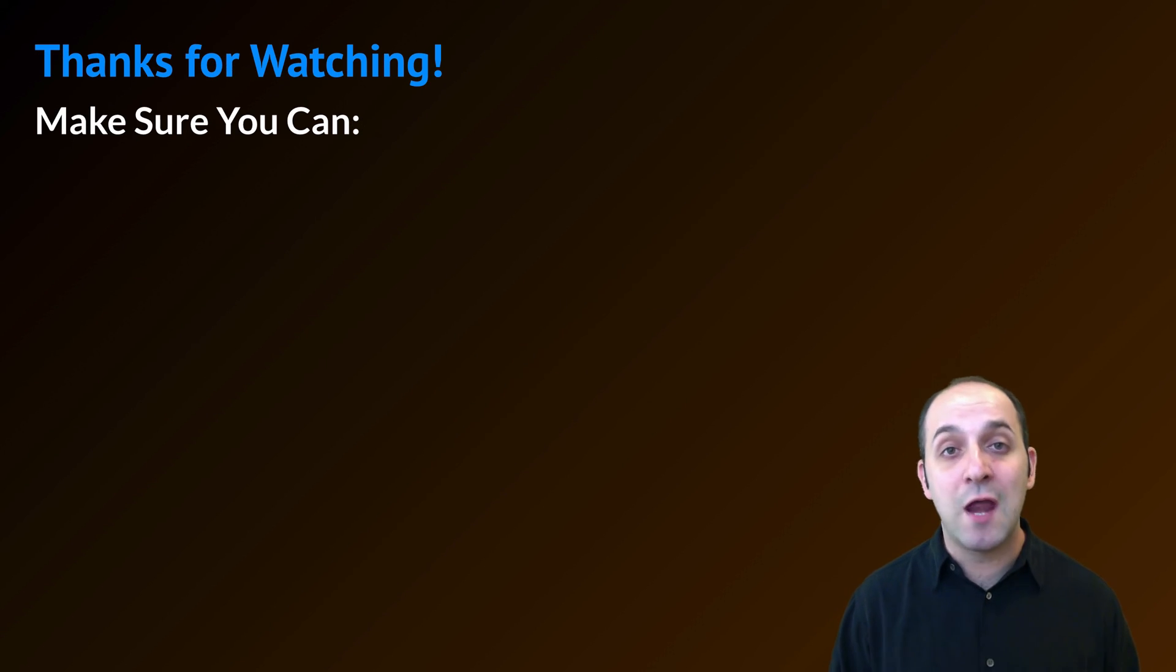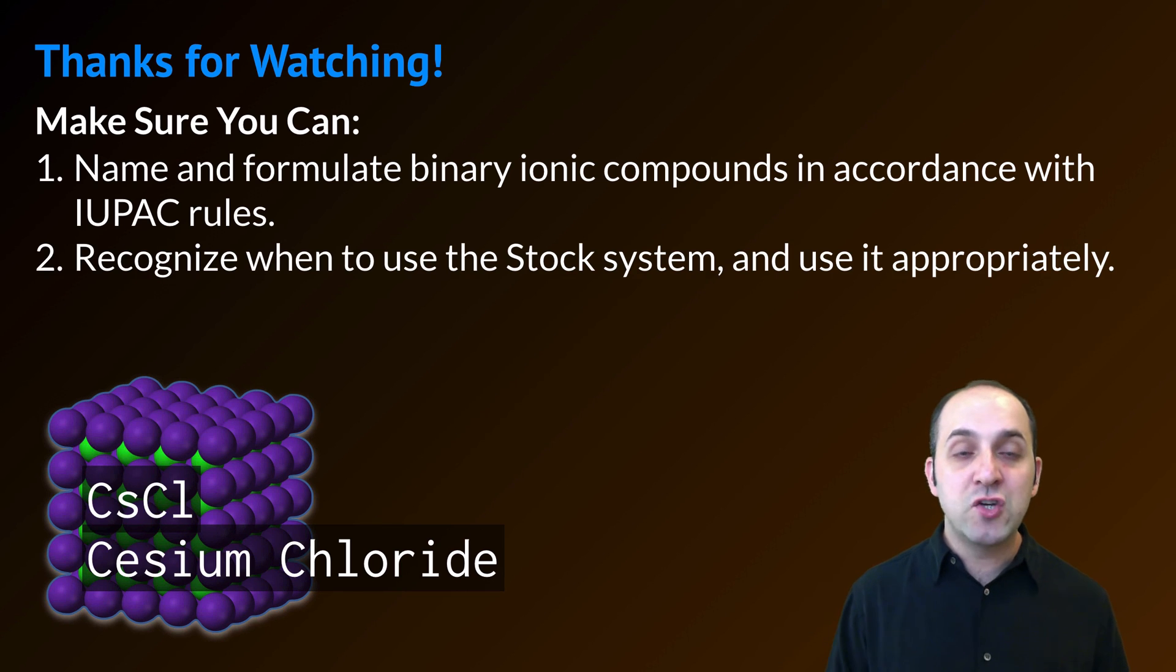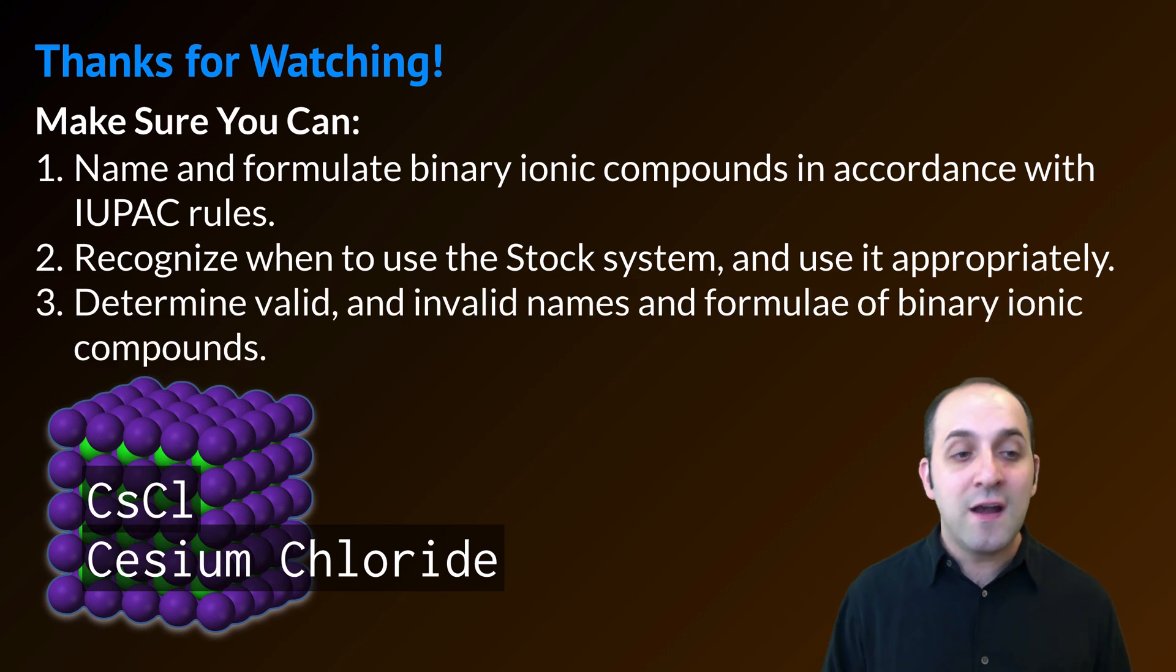Thanks so much for watching our discussion of naming and writing binary ionic compounds and formula. Make sure you can do the following things here. Make sure that you can name and formulate binary ionic compounds in accordance with the IUPAC rules that we've discussed. Also make sure that you can figure out when to use the stock system and use it appropriately. Finally, make sure that you can determine valid and invalid names and formulae for binary ionic compounds. If you can do all those things, you're doing great.